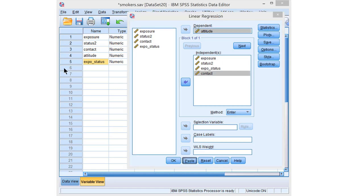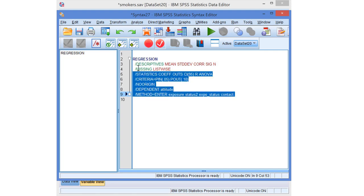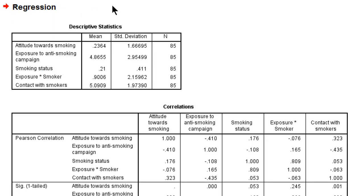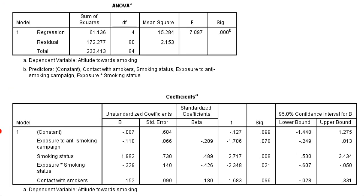Let's paste and run. Here is the output. The first table presents the descriptive statistics, telling us the mean scores and the standard deviations. We will use them in another video. Let's jump to the coefficients.